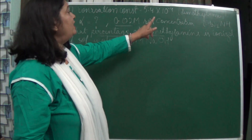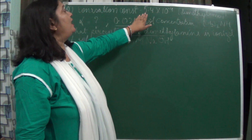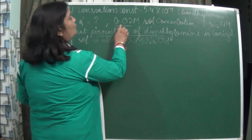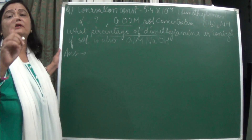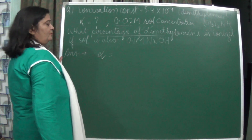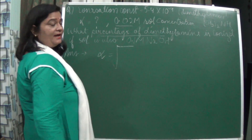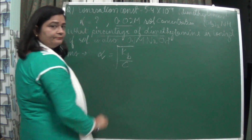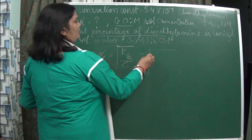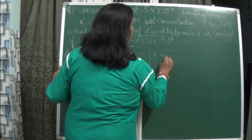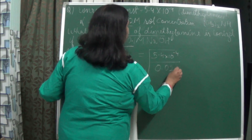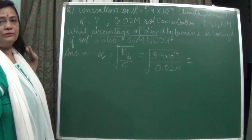Now coming to the next question. The ionization constant value of dimethylamine is 5.4 into 10 to the power minus 4. The concentration of dimethylamine given is 0.02 M solution. You have to find the degree of dissociation. Since dimethylamine is a base, the formula is: degree of dissociation equals root of (Kb upon C). Keep in the values: Kb is 5.4 into 10 to the power minus 4 and C is 0.02 M. Solve to get the degree of dissociation.